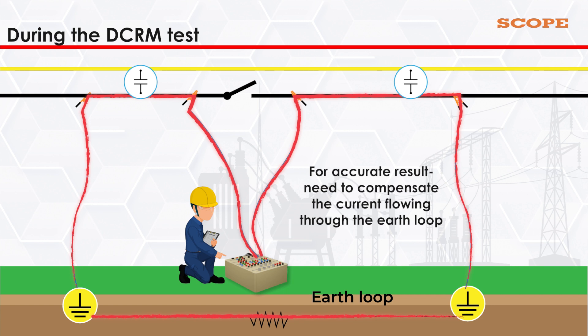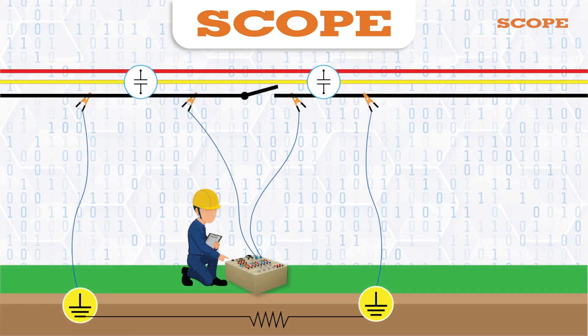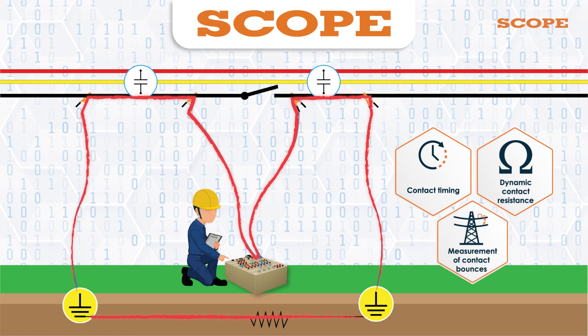To get the accurate result, we need to compensate the current flowing through the earth loop. Scope has developed and implemented special technology and algorithms to dynamically measure and compensate the current flowing through the earth loop and get the correct results of contact timings and dynamic contact resistance while the circuit breaker is grounded from both sides. Measurement of contact bounces has also become possible with this method.